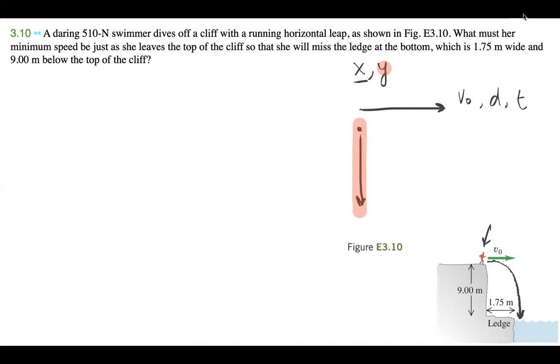The variables associated with this are going to be v-naught because she's going to start at some initial speed and that's zero meters per second. She's going to be accelerating due to gravity which is negative 9.80 meters per second squared. She's going to be reaching here at some vf, we're not really sure if we need that but we'll just write that down for now.